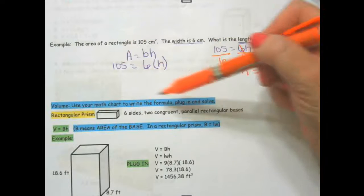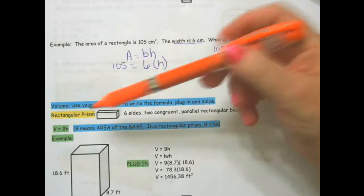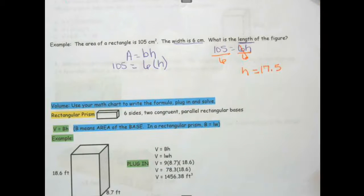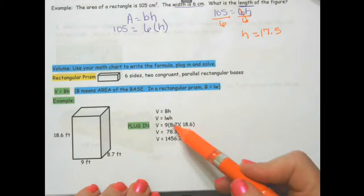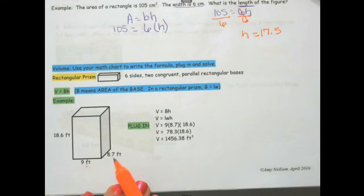Volume. Use your math chart to write the formula, plug in and solve. Big B remember, big B means the area of the base. Here they solved it for you: 9 times 8.7 times 18.6, you're going to get 1456.38 feet cubed.